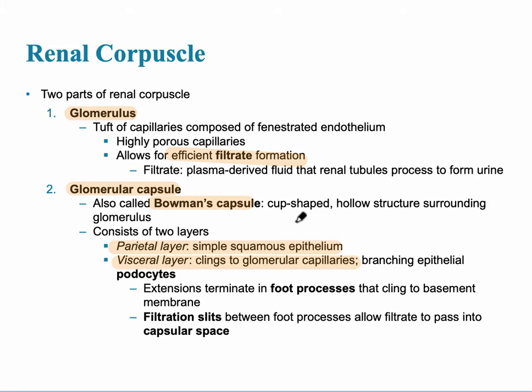Bowman's capsule is a cup-shaped structure that surrounds the glomerulus and has two specific layers — an inner layer and an outer layer. The inner layer is the visceral layer, which clings to the capillaries and has foot-like projections called podocytes. The outer layer is simple squamous epithelium.